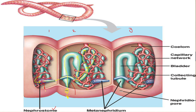In summary, excess water and waste enter the metanephridia through the nephrostome, move towards the collecting duct, then to the bladder, and finally exit through the nephridium pore. There are four main parts of the metanephridia: the first is the nephrostome, the second is the collecting tubule, the third is the bladder, and the fourth is the nephridium pore. This is how the entire excretory system runs in the body of earthworm.